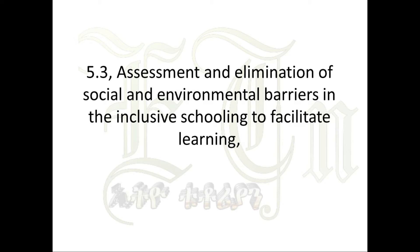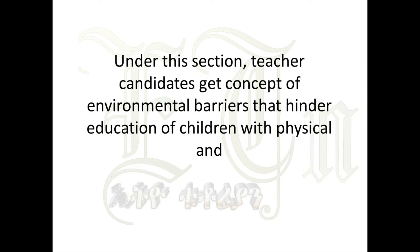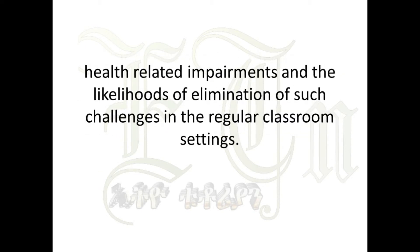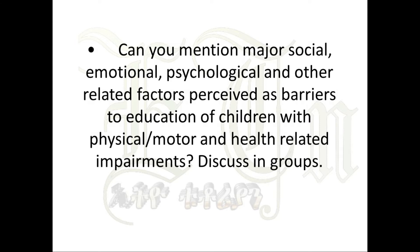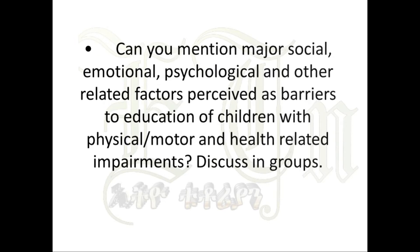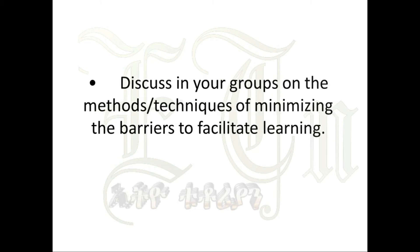Section 5.3: Assessment and elimination of social and environmental barriers in inclusive schooling. Under this section, teacher candidates gain concepts of environmental barriers that hinder education of children with physical and health related impairments, and the likelihoods of eliminating such challenges in regular classroom settings. Activity: What does socio-emotional adjustment mean? Mention major social, emotional, psychological, and other related factors perceived as barriers. Discuss in groups methods and techniques for minimizing these barriers to facilitate learning.